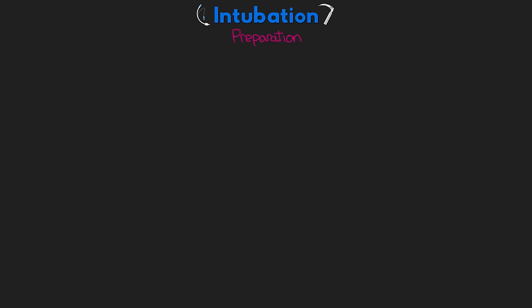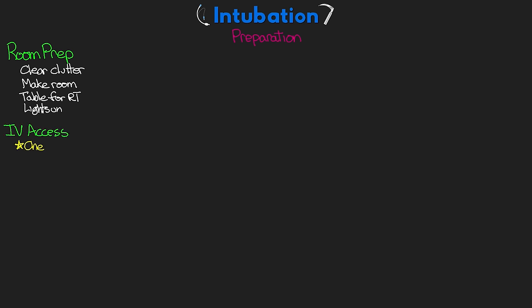Beyond grabbing and prepping equipment and medications, there are a few other prep considerations. For room prep, clear out any unnecessary clutter and make sure there's plenty of room for everyone. Have a bedside table for respiratory therapy to lay their equipment on. Turn on the lights if they're off. Next is IV access — ensure you have good IV access early. If an IV is bad or unavailable, get a new one placed as soon as possible.